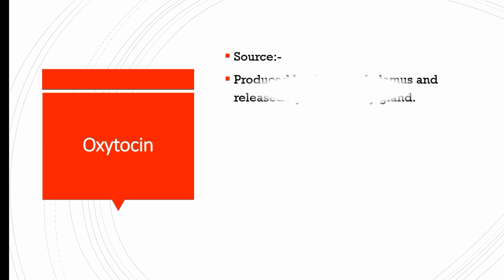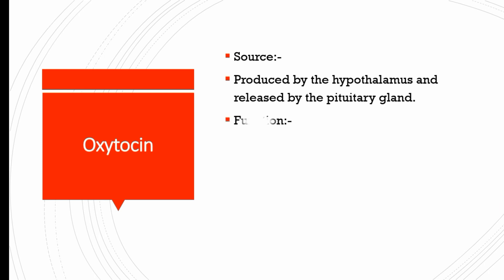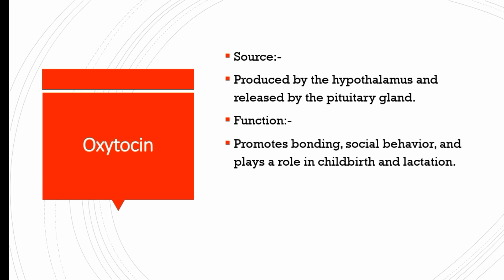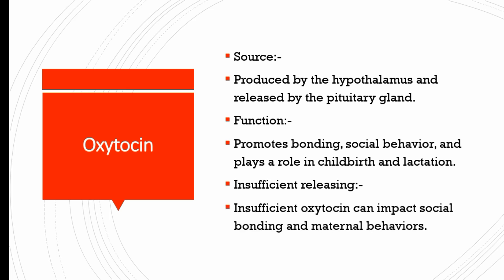Oxytocin is produced by the hypothalamus and released by the pituitary gland. Its function is to promote bonding and social behavior, and it plays a role in childbirth and lactation. Insufficient oxytocin can impact social bonding and maternal behaviors.